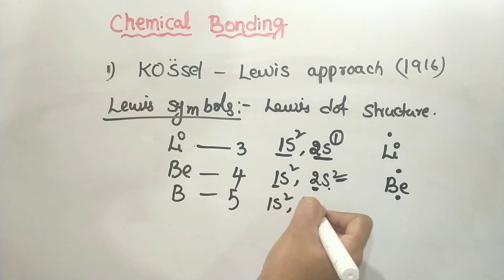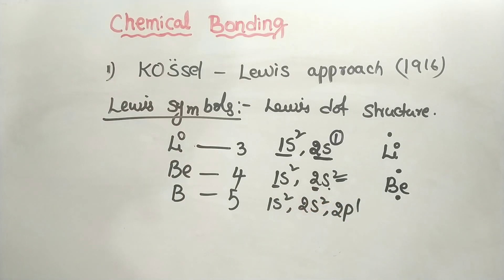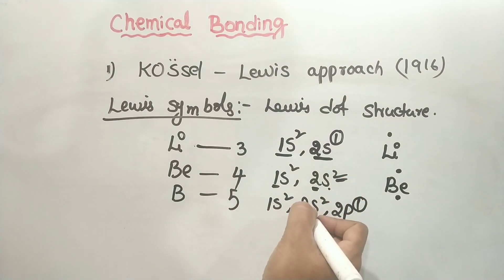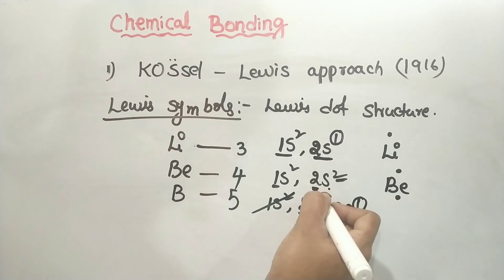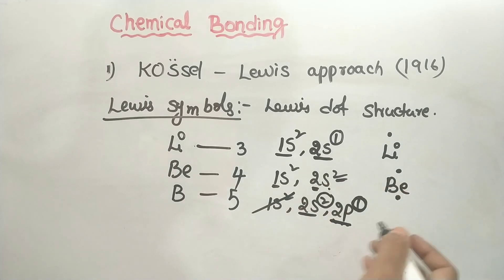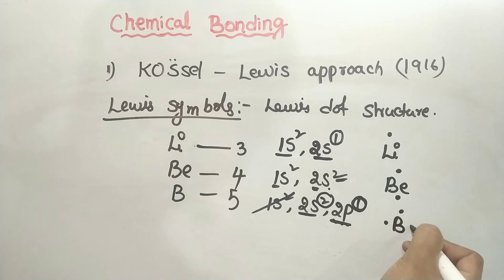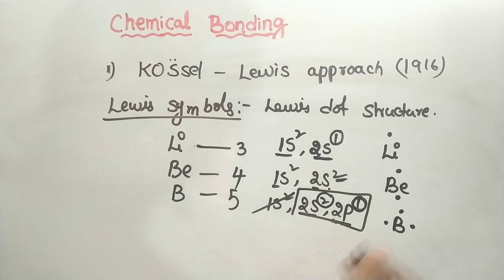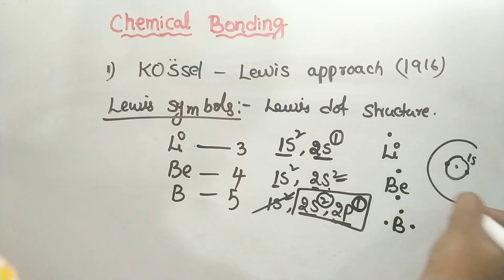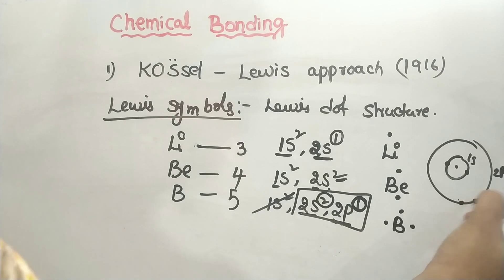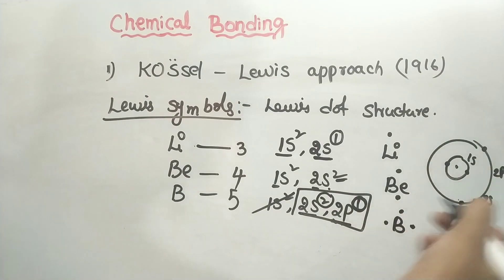For boron: 1s2, 2s2, 2p1. The outer shell is the second shell — 2s has 2 electrons and 2p has 1 electron, giving a total of 3 electrons in the outer shell. So boron has 3 valence electrons.